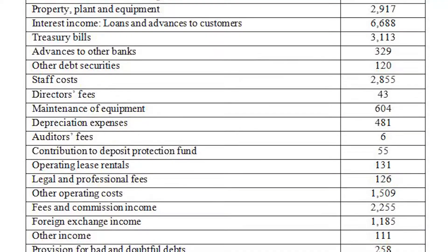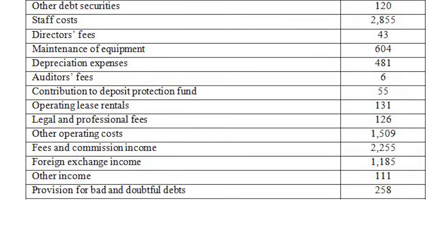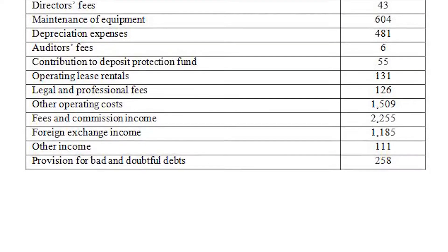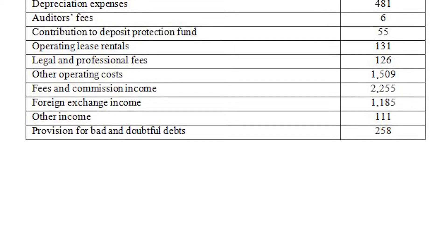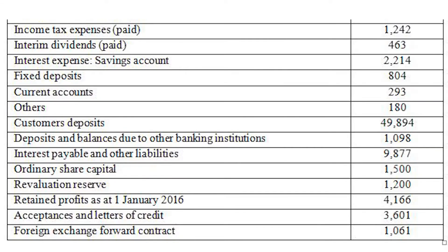We also have interest income, staff costs, director's fees, maintenance of equipment, depreciation expenses, auditor's fees, contribution to deposit protection fund, operating lease rentals, legal and professional fees, other operating costs, fees and commission income, foreign exchange income, other income, provision for bad and doubtful debts, income tax expense, interim dividend paid, interest expense on savings accounts, fixed deposits, current accounts and others, customer deposits, deposits and balances due to other banking institutions, interest payable and other liabilities, ownership capital, revaluation reserve, retained profits as of 1 January 2016, acceptances and letters of credit, and foreign exchange forward contracts.